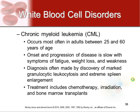Chronic myeloid leukemia (CML) normally occurs in adults between ages 25 and 60. Onset and progression are very slow, with symptoms of fatigue, weight loss, and weakness — which can be easy to overlook. Diagnosis is typically made on routine physical exam through blood work changes. Extreme spleen enlargement is also noted. Treatment is chemotherapy and radiation, and potentially a bone marrow transplant for more severe cases.